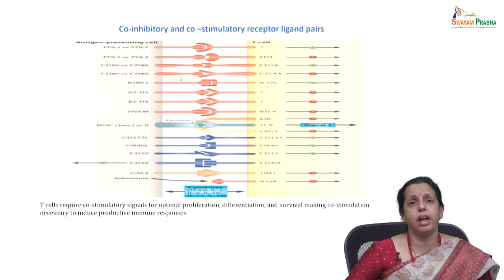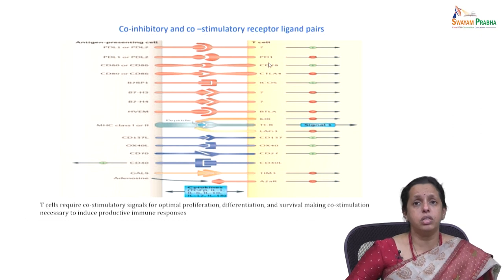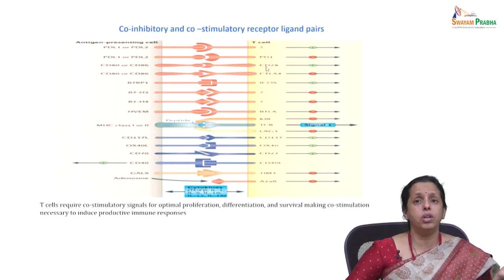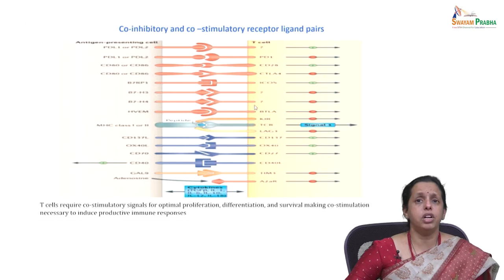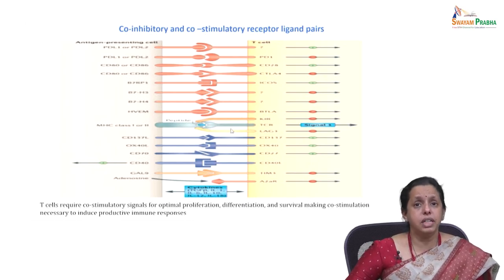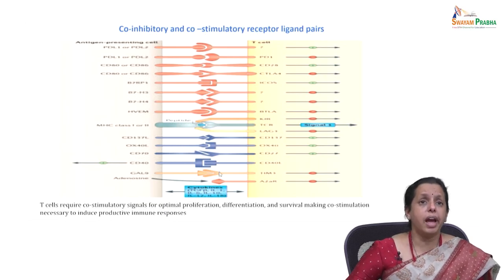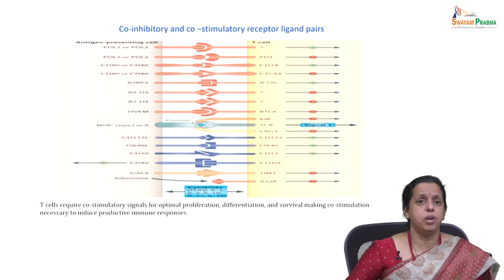If you are able to block any of the co-stimulatory or co-inhibitory pathways, or optimize their use, it has the potential to increase effective T cell-mediated anti-tumor immune response, thereby increasing the efficacy of cancer immunotherapy.